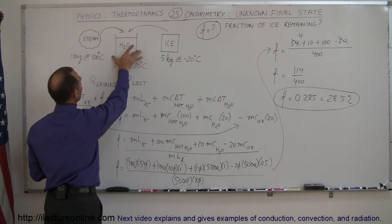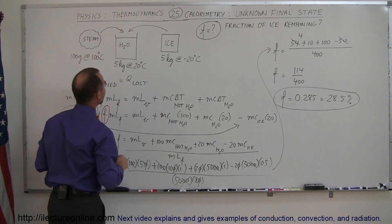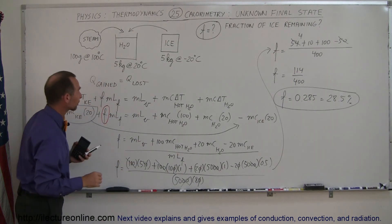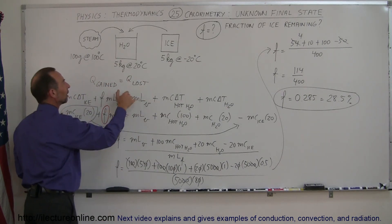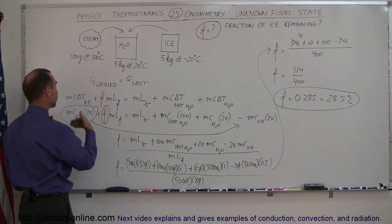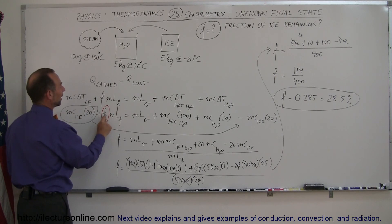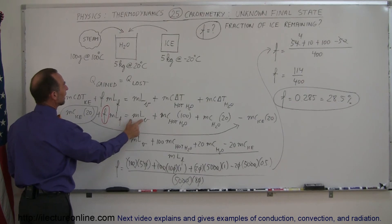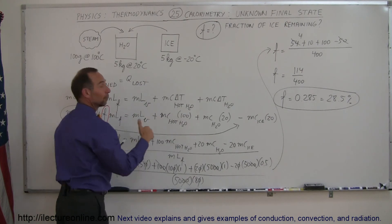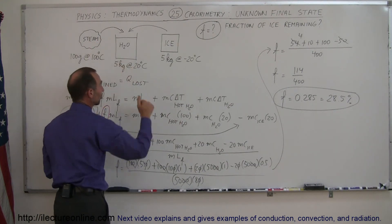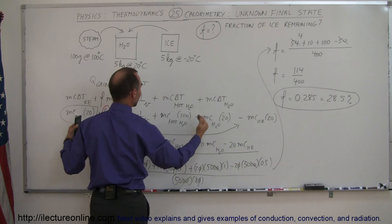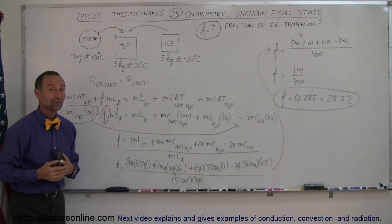In conclusion: we have a bucket of water, some steam, and some ice all put together. We assume not all the ice is going to melt and look for the fraction remaining. We write Q gained equals Q lost — the ice gains heat going from minus 20 to 0, then a fraction of the ice melts. That equals the heat lost by the steam condensing, the heat lost by the resulting water cooling from 100 to 0 degrees, and the heat lost by the bucket water going from 20 to 0. Setting those equal and solving for f gives us the answer.